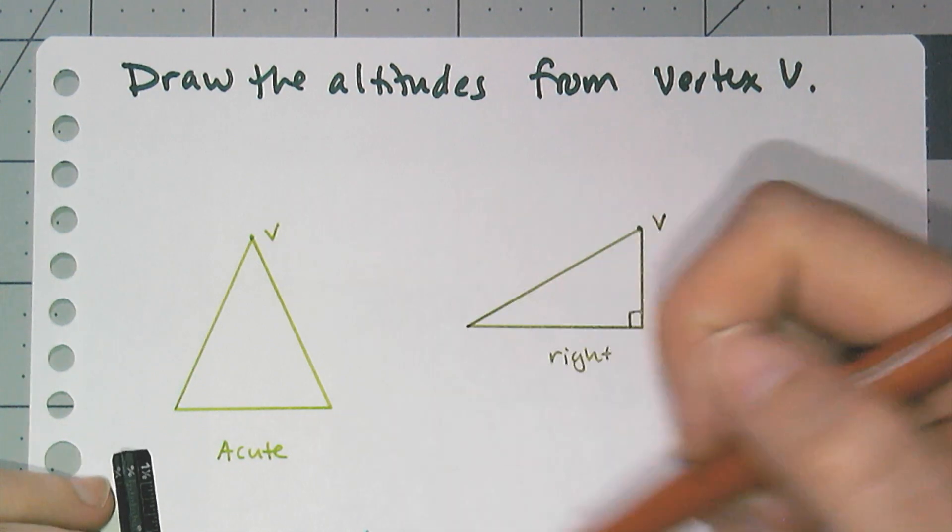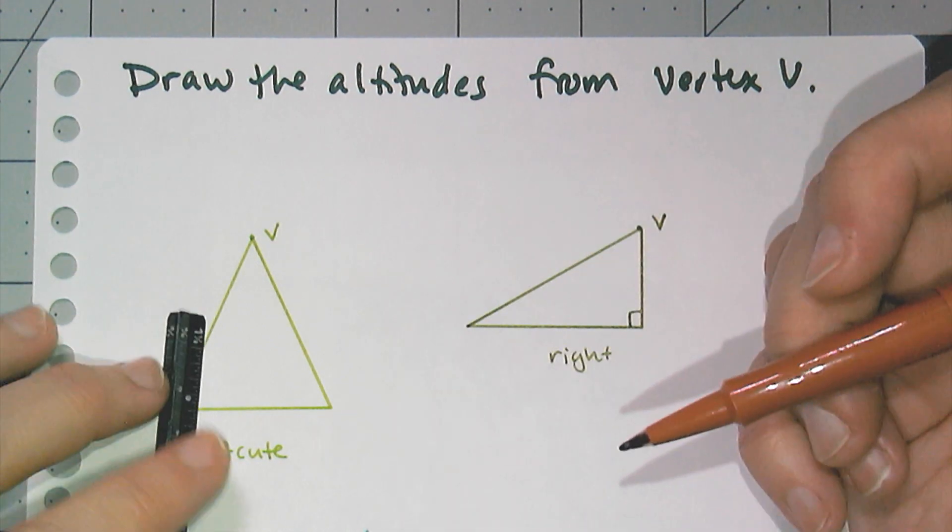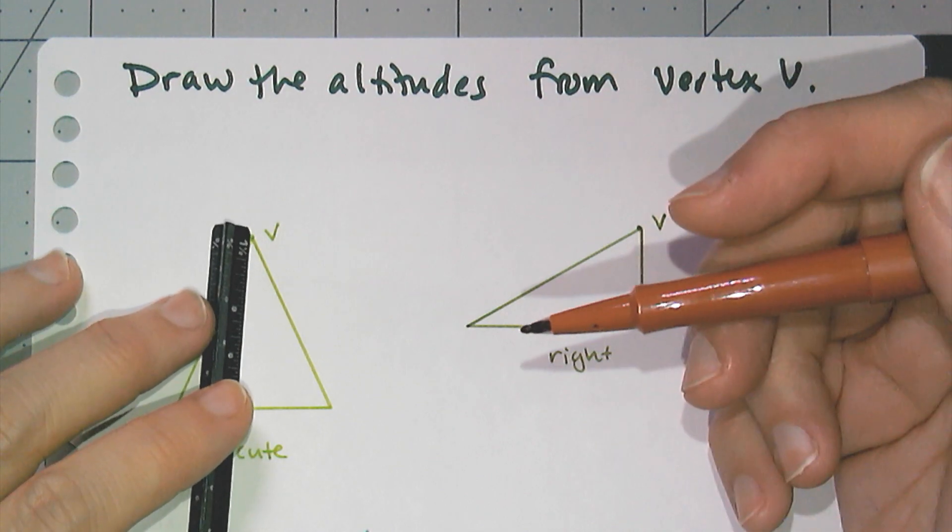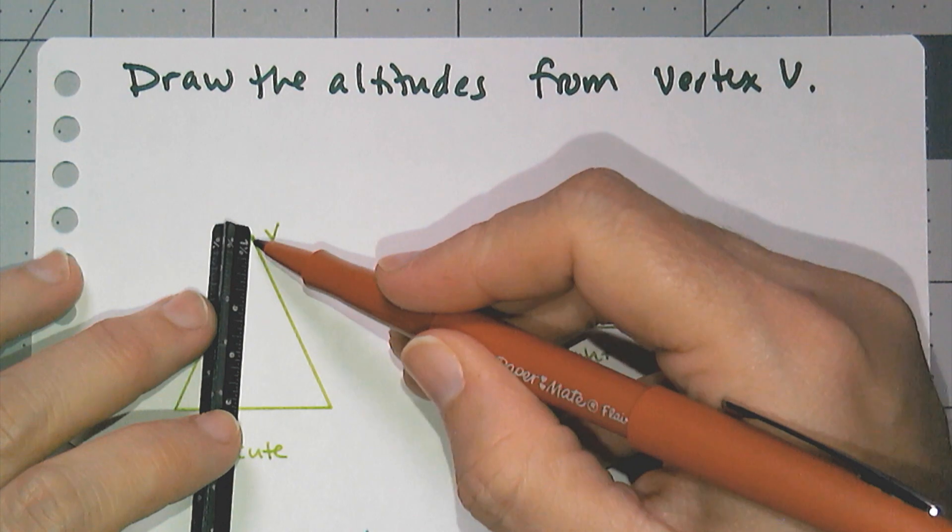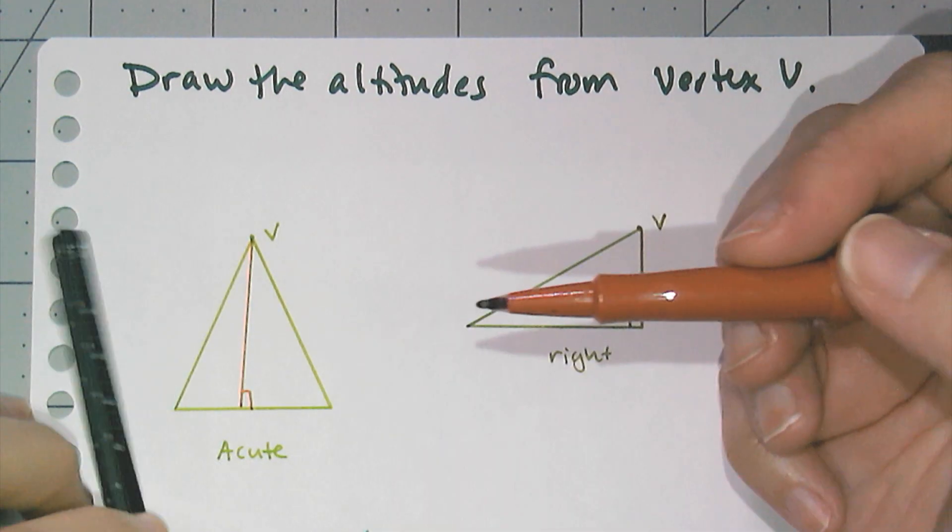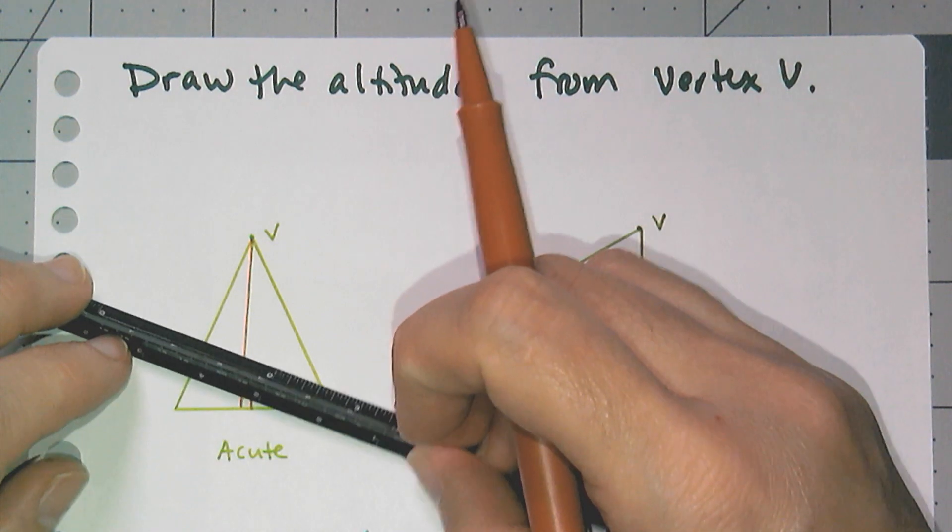This is an acute triangle. And so the altitude or all of the altitudes of an acute triangle are going to be on the interior of the triangle. And I can draw the other one there and another one there.